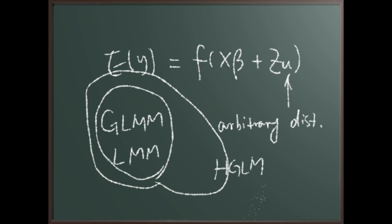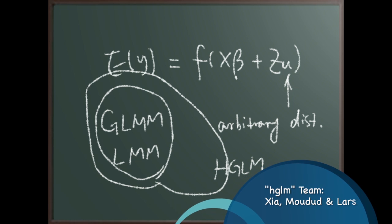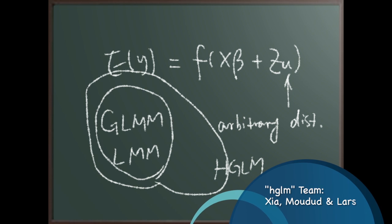So HGLM covers both GLMM and LMM, and both can be done in the HGLM package. That's a simple, slightly theoretical explanation of HGLM and its relationship to other linear models. Hopefully this clarifies something for you — thanks for watching.